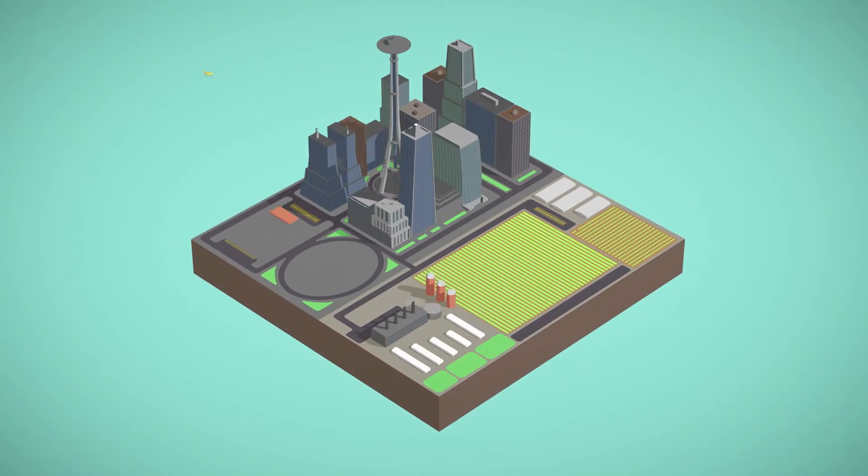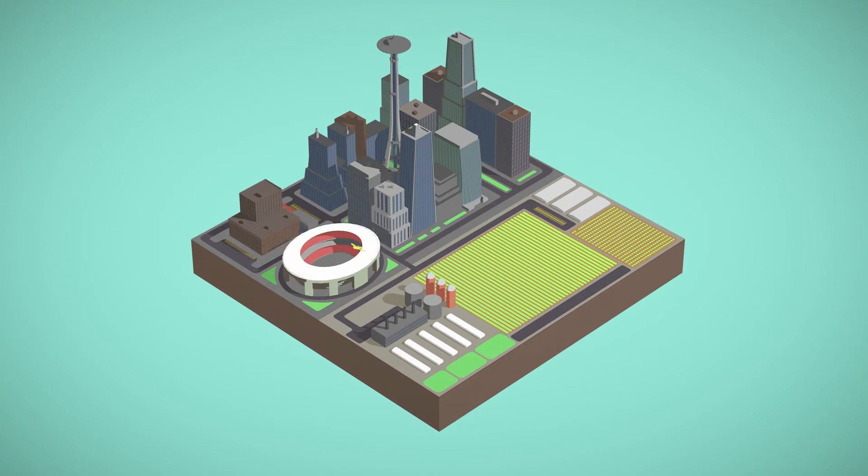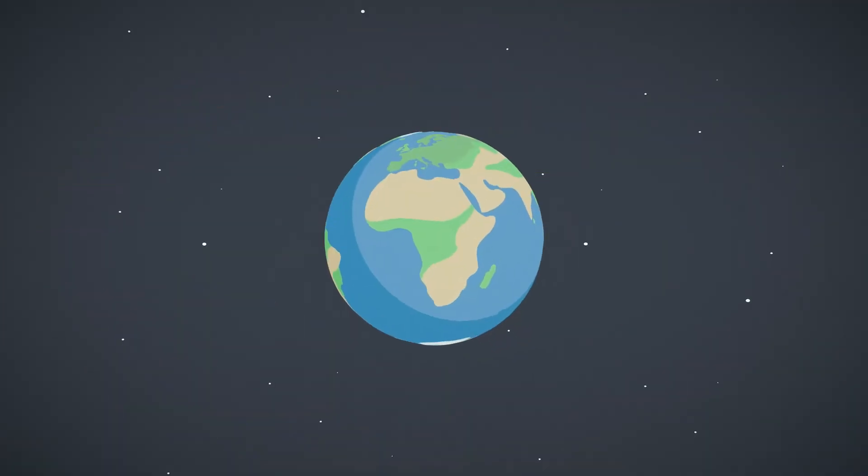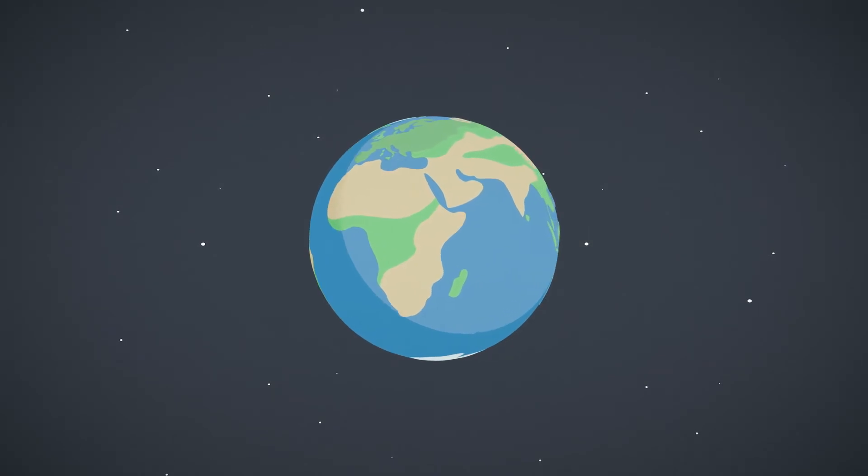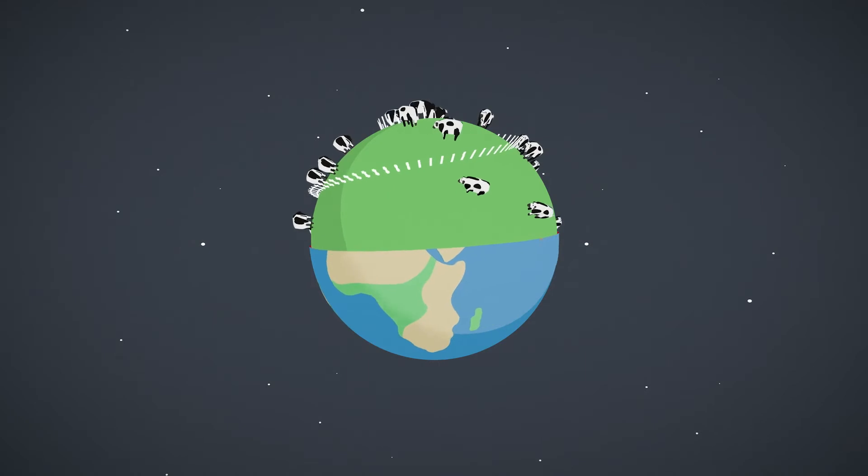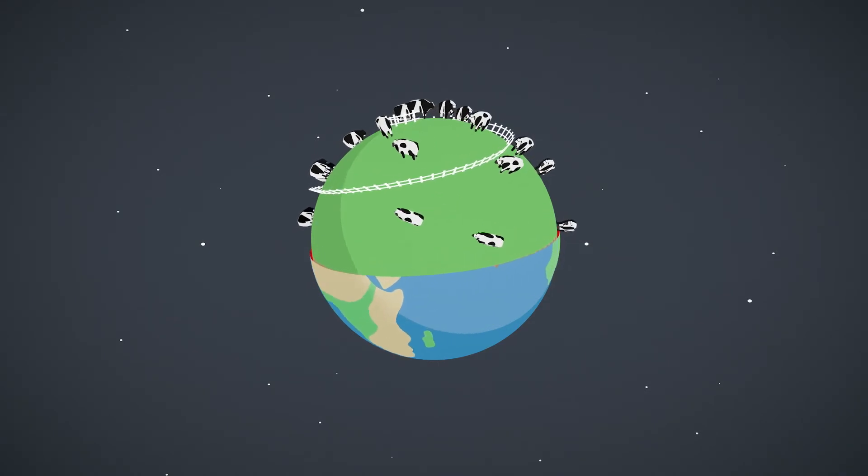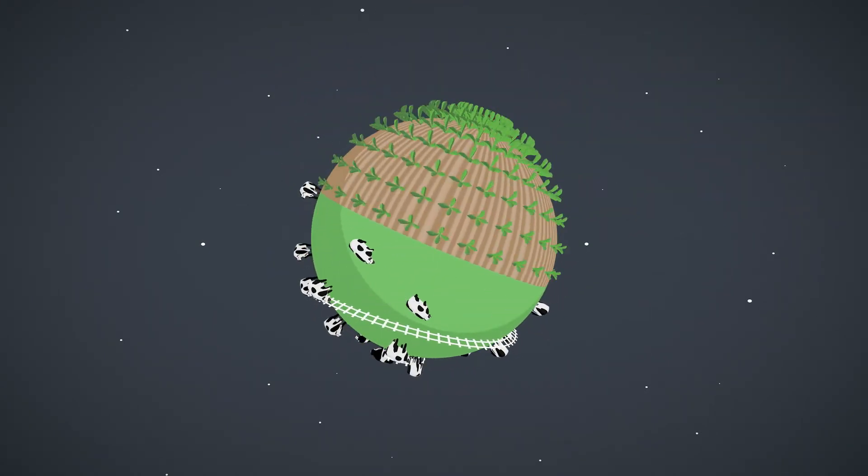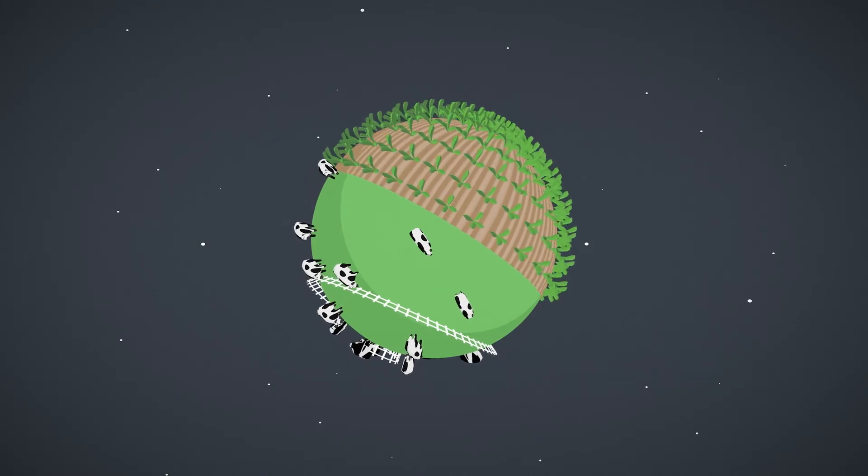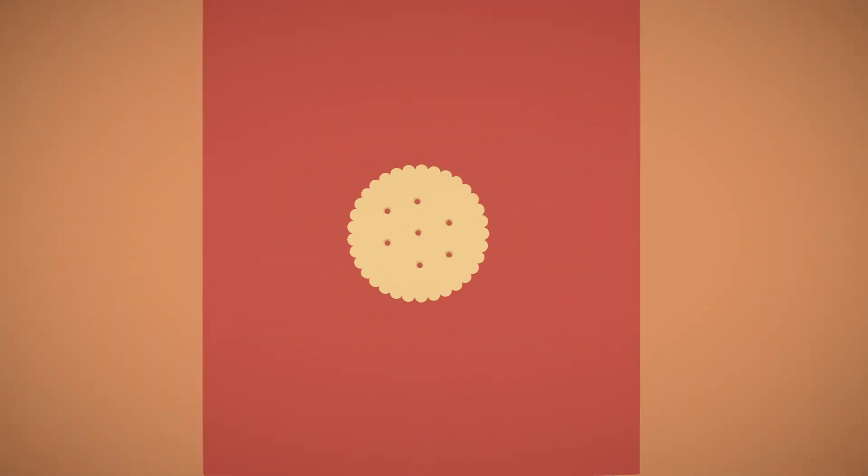It all comes down to food and economics. There's over 7 billion people in the world today, and they all need to eat. In order to meet that demand, farmers and businesses clear large chunks of forest for animal grazing and for highly profitable crops like soy and oil palms.